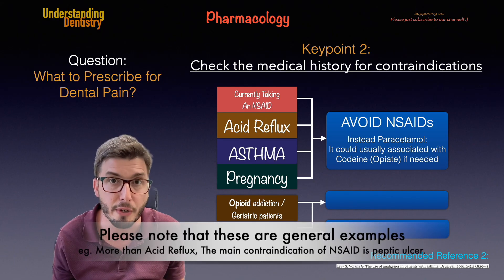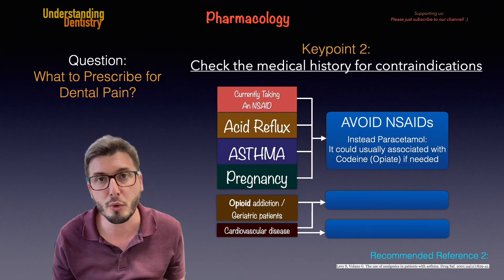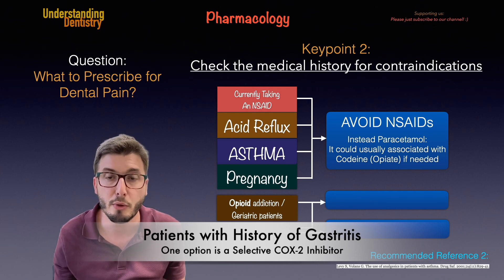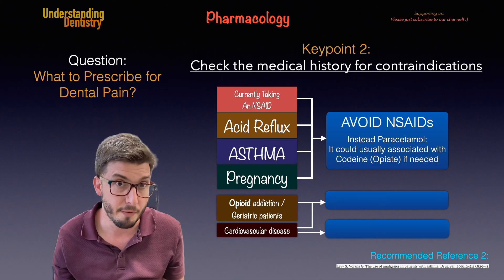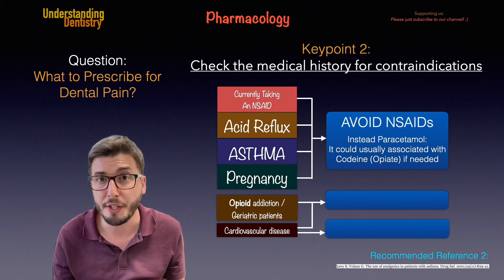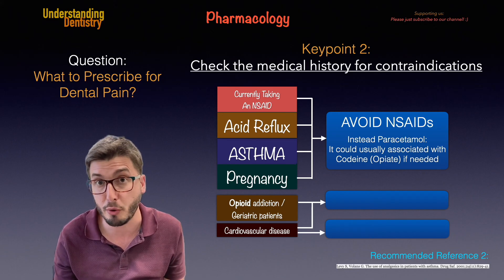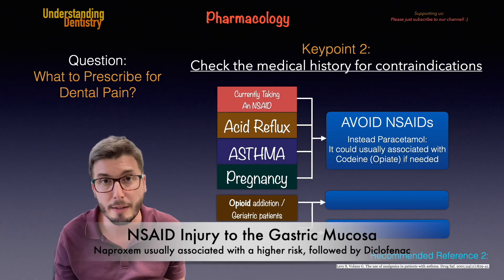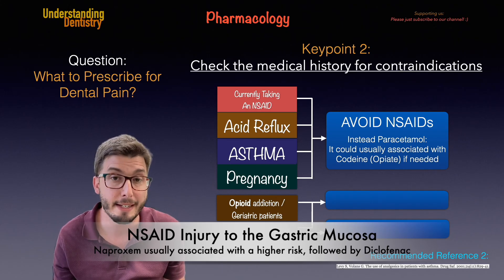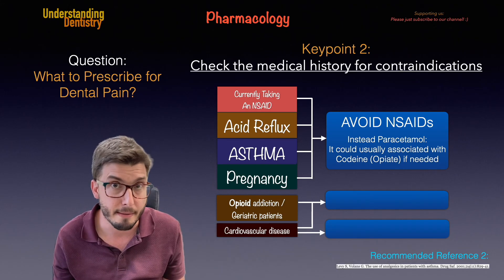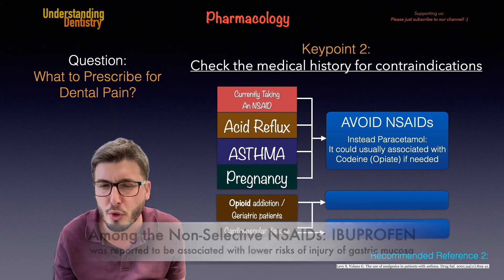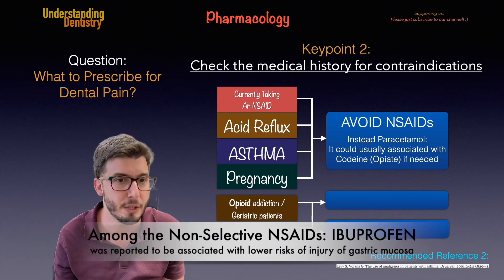In those cases we need to avoid NSAIDs, as they will likely cause injury to the gastric mucosa. Instead, we should choose selective COX-2 inhibitors, which don't cause the reduction in prostaglandin and therefore cause much less gastric injury. Among NSAIDs, naproxen is the worst regarding gastric mucosa injury, followed by diclofenac, and ibuprofen is the best option if an NSAID is necessary.